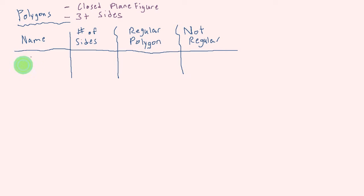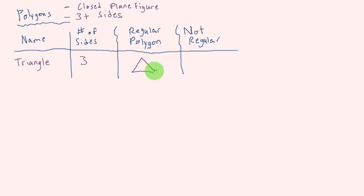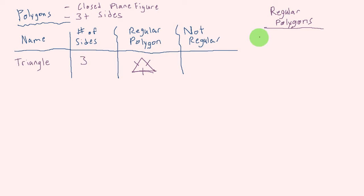The first polygon we're going to look at is a triangle, and we know that a triangle has three sides. For a regular polygon, it can't just be a closed plane figure with three or more sides — it has to have some extra qualities. A regular polygon has all side lengths congruent and all angles congruent.